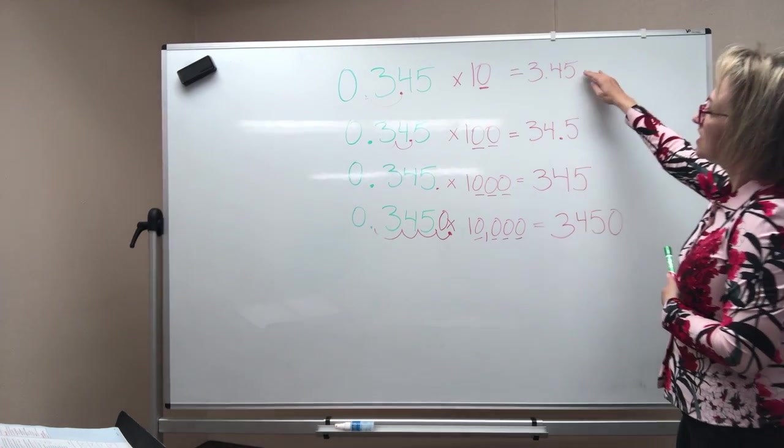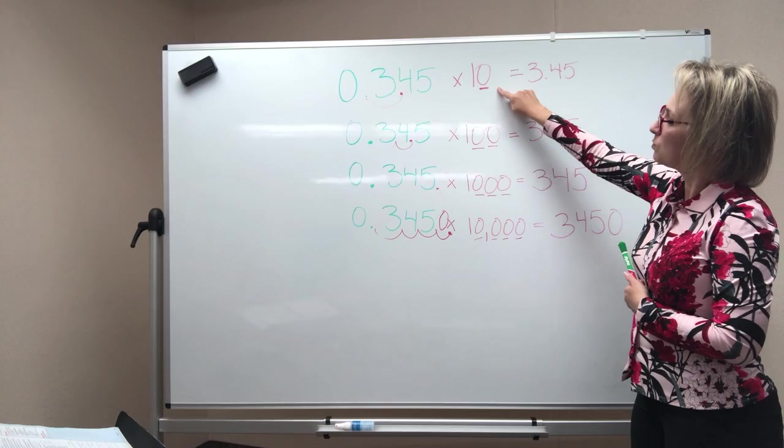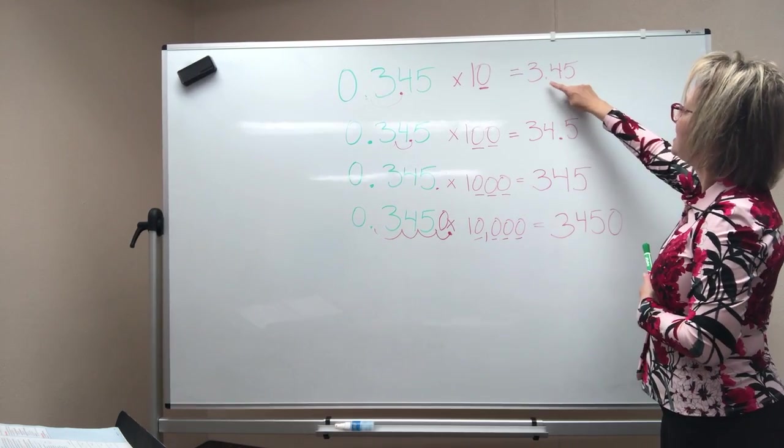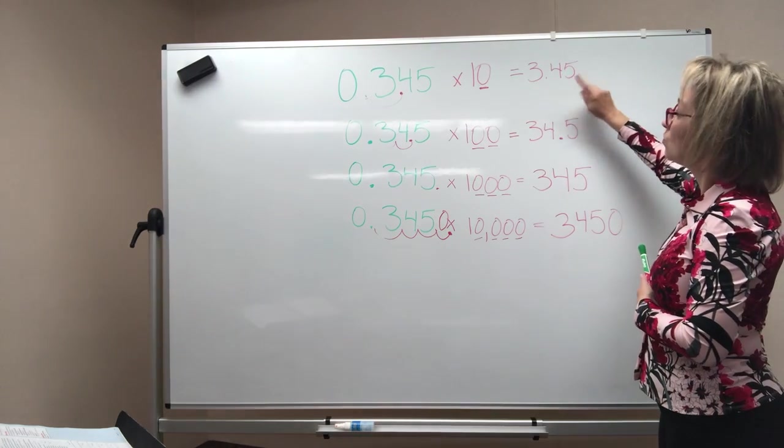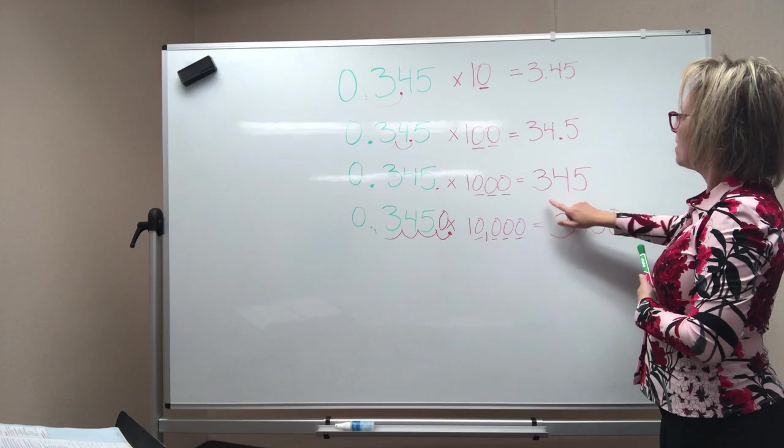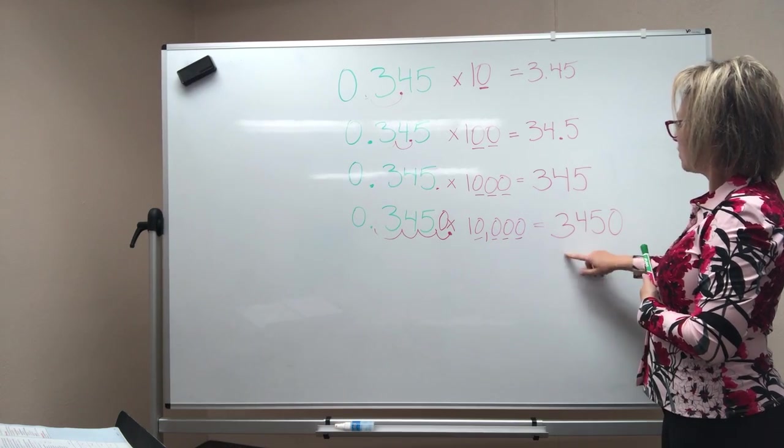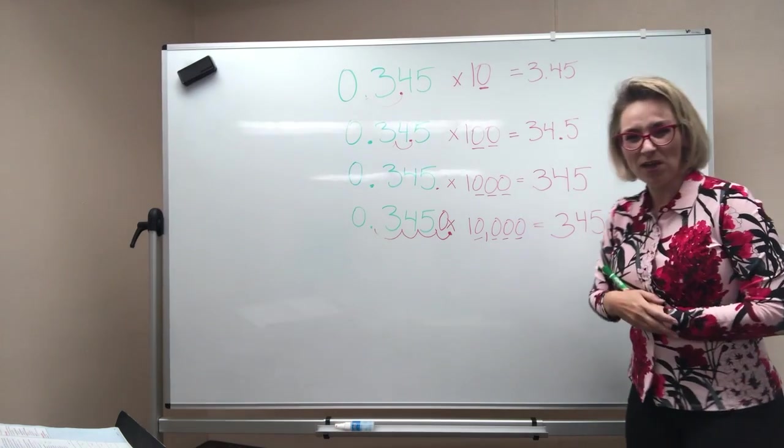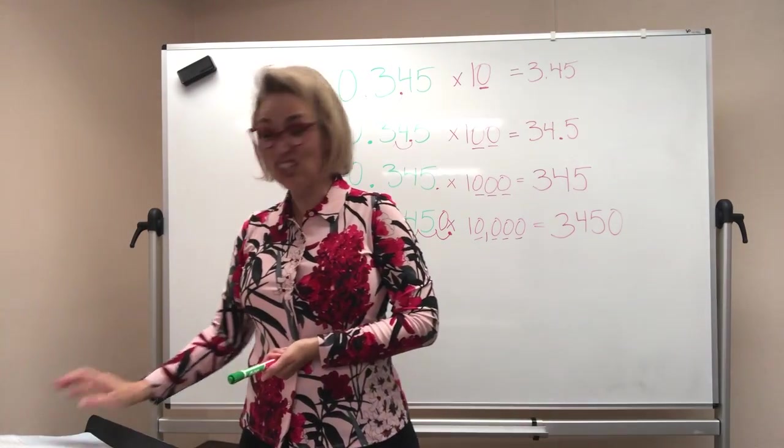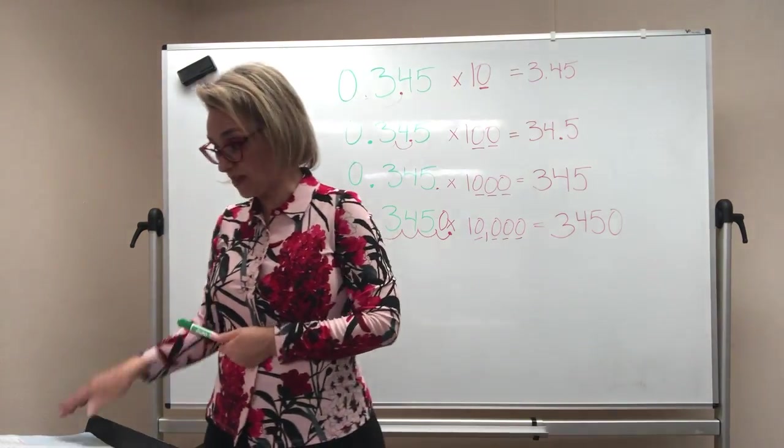Do you see how that works? Do you see how when you look at the answers as I multiply by 10, 100, 1,000, 10,000 as there are more zeros, the decimal place just moved over one spot each time. We're at 3.45, 34.5, 345, 3,450. Do you see a pattern there? That's why multiplying by tens, hundreds, and thousands is so easy. I love it, love it, love it.